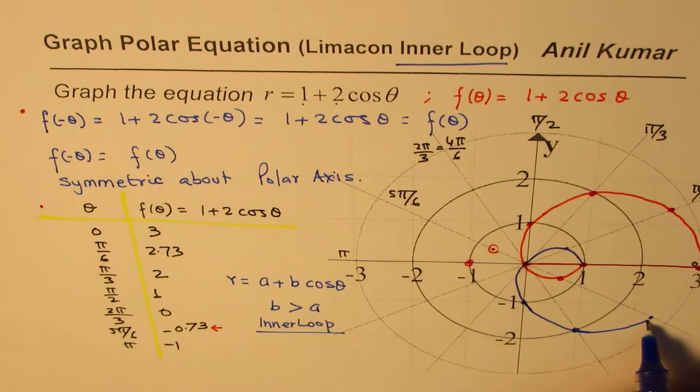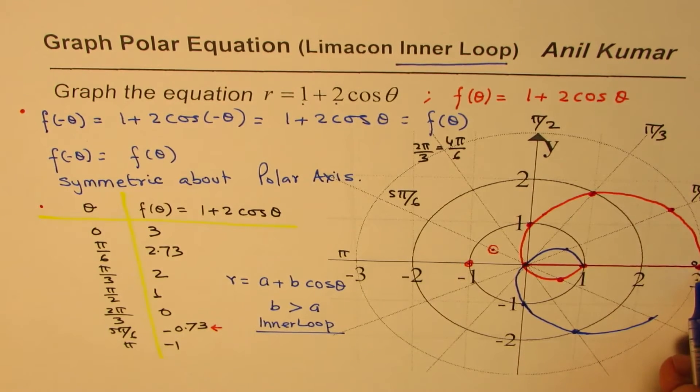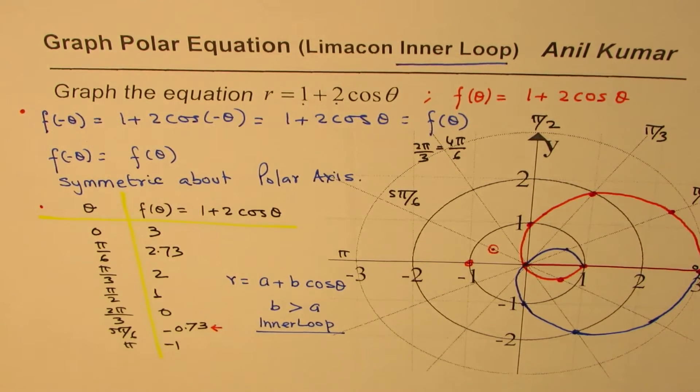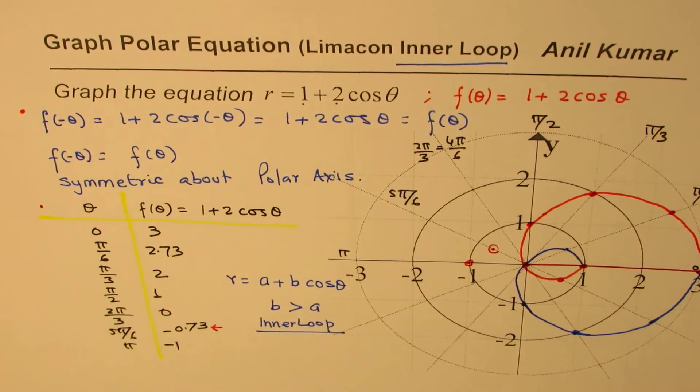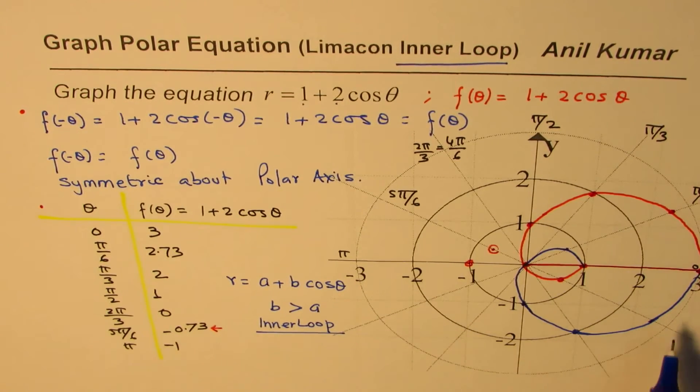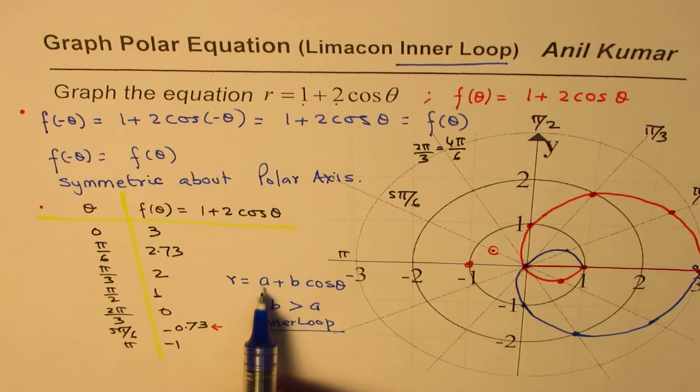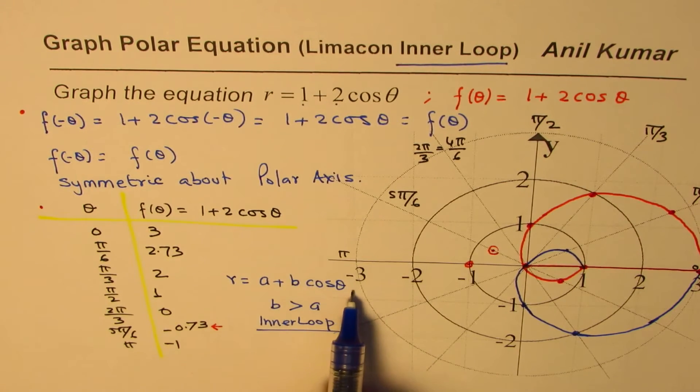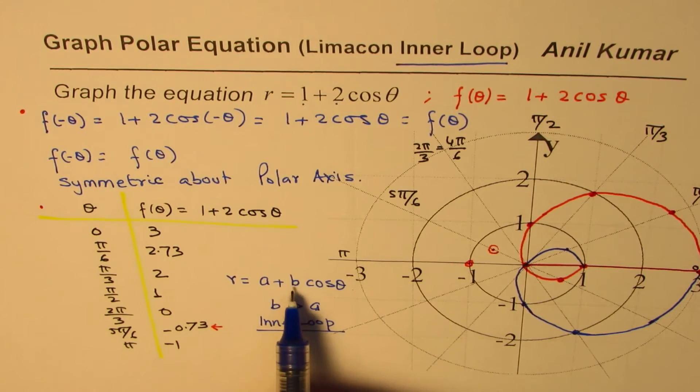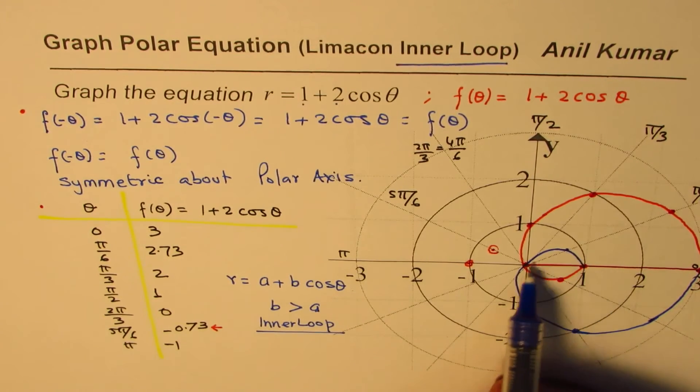So we can connect these points. I hope this graph is good enough for you. So this is what you get. And that's the graph of r equals 1 plus 2 cosine theta. You get the idea. So we will have similar family of graphs for any function, which is a plus b cosine theta, where b is greater than a. So whenever b is greater than a, we'll get this loop.